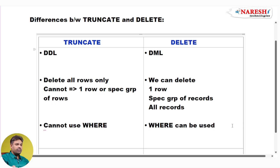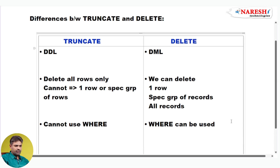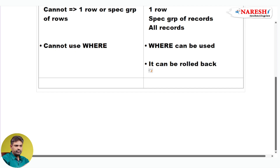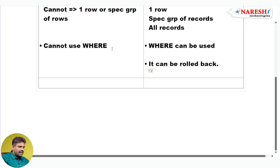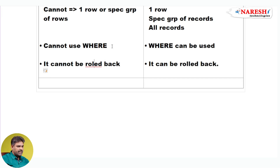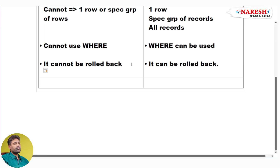The next difference is: can we cancel the DELETE action? Yes, it can be rolled back — the DELETE action can be rolled back, we can cancel the action. But can we cancel the TRUNCATE action? No, it cannot be rolled back. DELETE action can be rolled back, but TRUNCATE action cannot be rolled back.